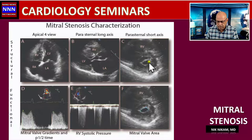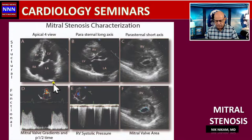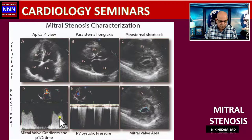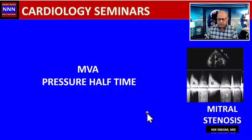In the short-axis view, we can planimeter the orifice size to determine the degree of mitral stenosis. In the apical four-chamber view, we can see the anterior and posterior leaflets along with a good measurement of left atrial size, which is an important component in determining the extent of mitral stenosis. The pulsed Doppler across the mitral valve apparatus provides the gradient, helping to calculate the mitral valve area.